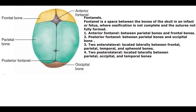Fontanelles. A fontanelle is a space between the bones of the skull in an infant or fetus where ossification is not complete and the sutures are not fully formed. 1. Anterior fontanelle — between parietal bones and frontal bones. 2. Posterior fontanelle — between parietal bones and occipital bone. 3. Two anterolateral fontanelles — located laterally between frontal, parietal, temporal, and sphenoid bones. 4. Two posterolateral fontanelles — located laterally between parietal, occipital, and temporal bones.